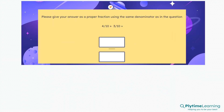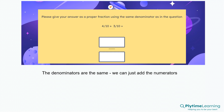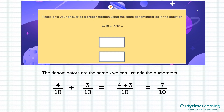What about this question? Give your answer as a proper fraction using the same denominator as in the question. Four tenths plus three tenths — the denominators are the same, so we can just add the numerators. It's the same as four plus three over ten. Four plus three equals seven, so it equals seven tenths. In our answer box we would write seven tenths.